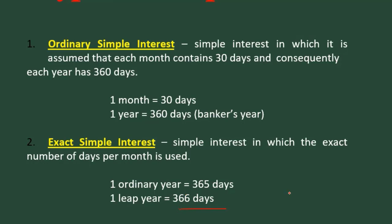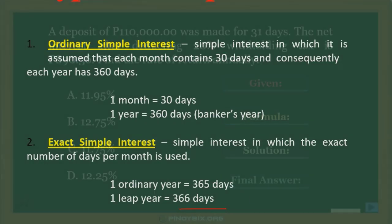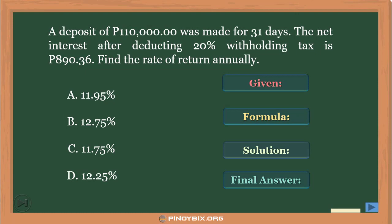We need to determine first if a year is a leap year or not. I will discuss that when we have a problem related to exact simple interest. For now, going back to our problem, the answer is Letter C: 11.75%.